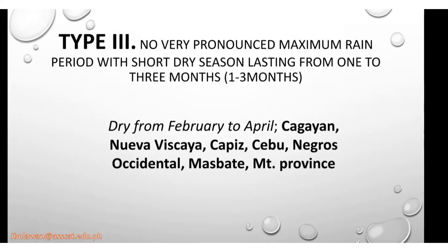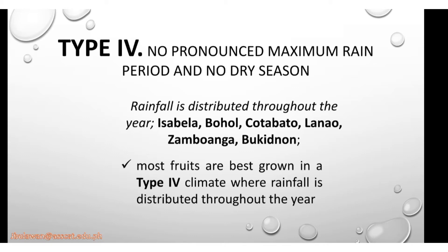The fourth type has no pronounced maximum rain period and no dry season, so rainfall is distributed throughout the year. Places include Isabela, Bohol, Cotabato, Lanao, Zamboanga, and Bukidnon. Most fruits and crops are best grown in these Type 4 places because of the climate favorable for agricultural production.